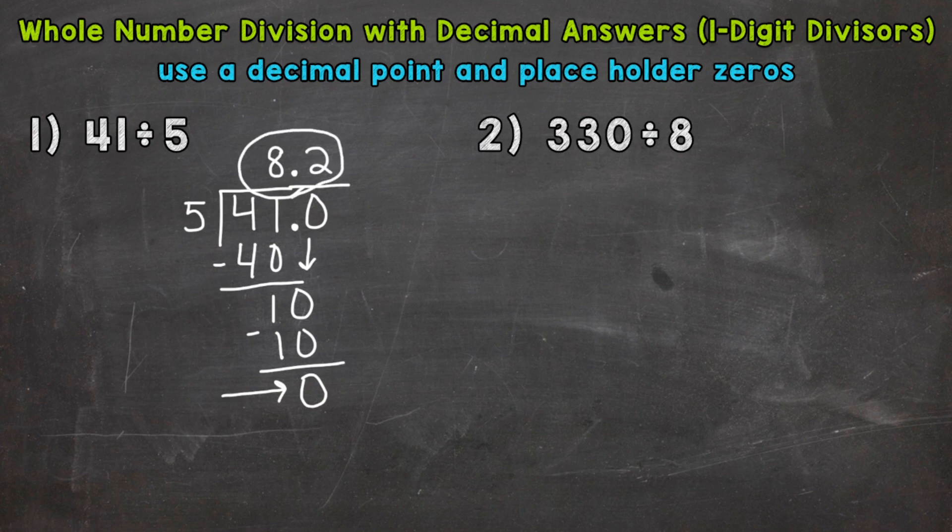Now, sometimes we have to go beyond the tenths place. So for example, number two, we're going to have to use more than one placeholder zero. We have 330 divided by 8. So let's set that up. 330 divided by 8.